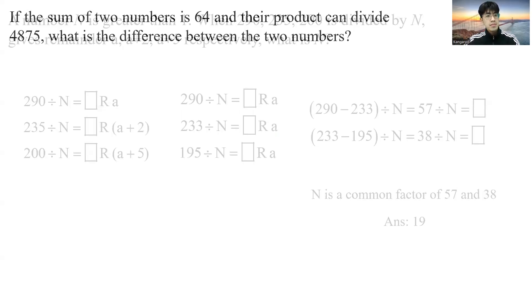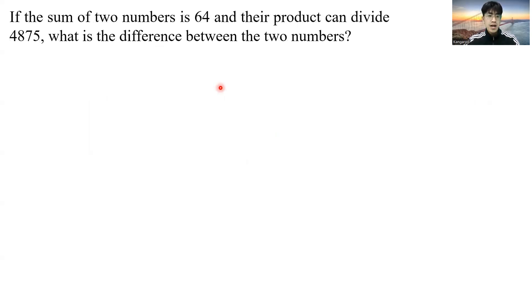Let us move on to the next question. If the sum of two numbers is 64 and your product can divide 4875, what is the difference between the two numbers? Now, I have two numbers, a and b. The sum is 64. And I know that a times b, the product can divide 4875. This means that a times b must be a factor of this number. And if the product of a and b is a factor of 4875, this means that a and b are both factors of 4875. And since a plus b is 64, a and b should both be smaller than 64. Now, what's the next step?